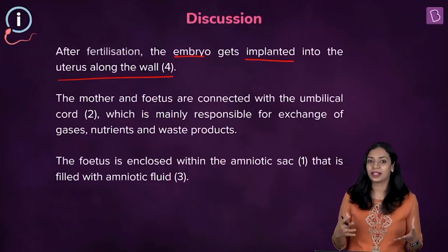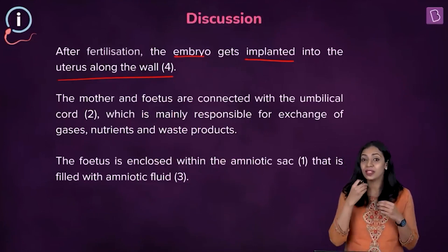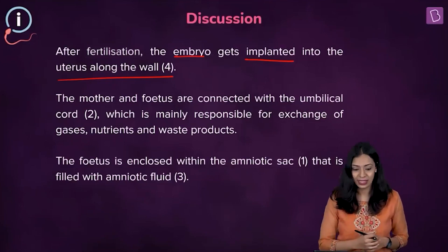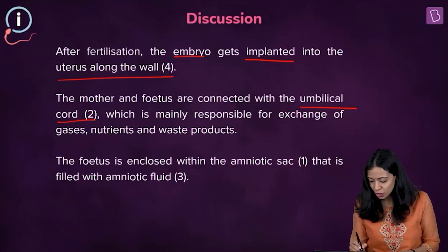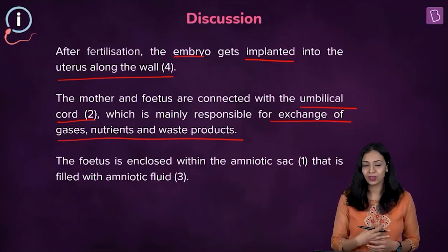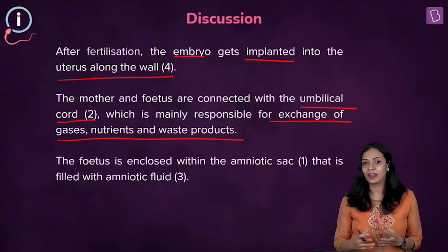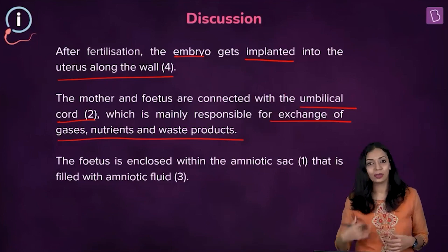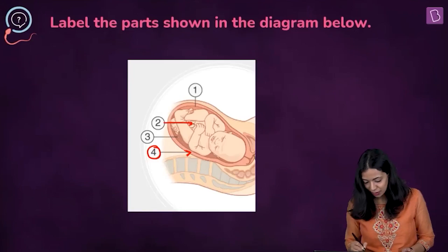The placenta acts as a connection between the mother and the developing fetus. A tube-like structure — the umbilical cord — connects the placenta with the fetus. Its function is to ensure exchange of gases, nutrients, and waste products between the fetus and the mother. Oxygen and nutrients are delivered to the fetus, and nitrogenous waste and carbon dioxide are transported back to the mother. Label two in the diagram represents the umbilical cord.